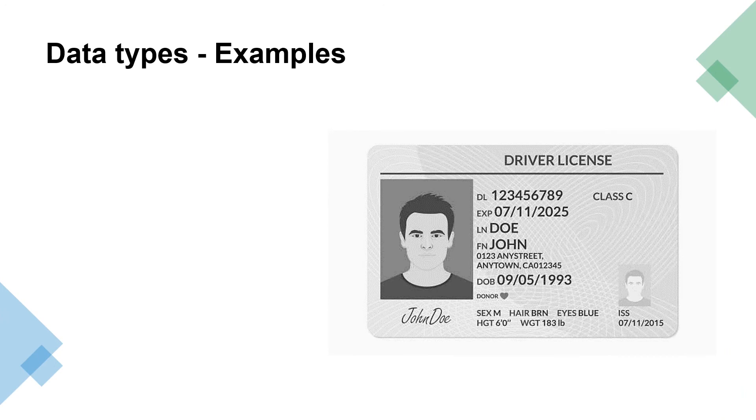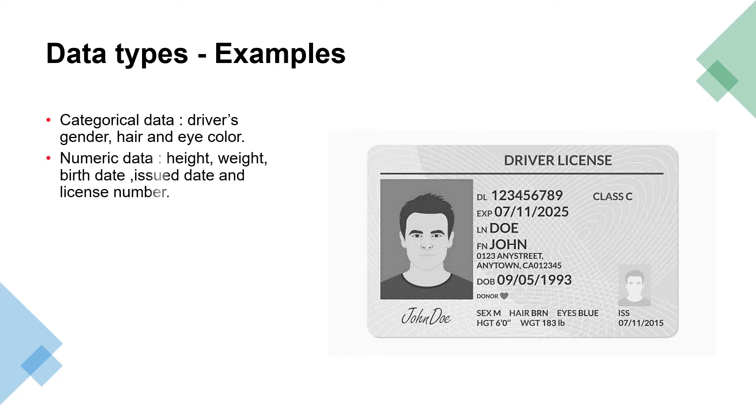Let's look more closely at the difference between categorical and numeric data. Your driver's license provides several kinds of data about you. Some are categorical, some are numeric. Categorical data include gender, hair color, and eye color. Numeric data include height, weight, birth date, expiry date, and license number.